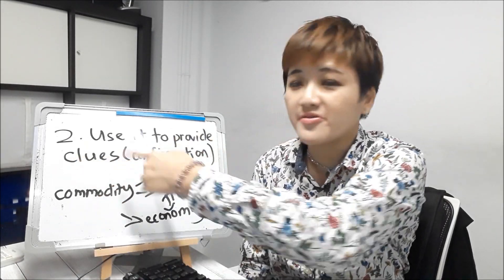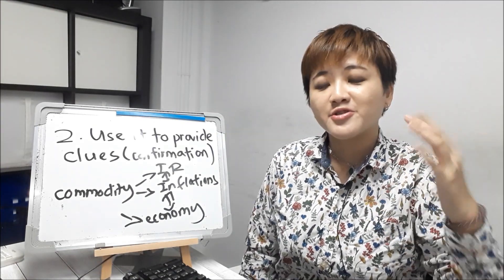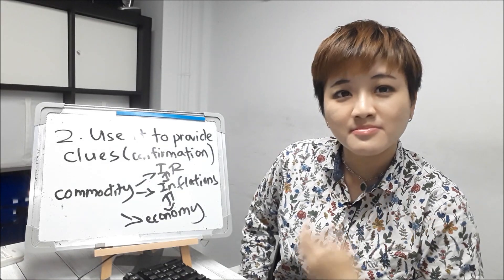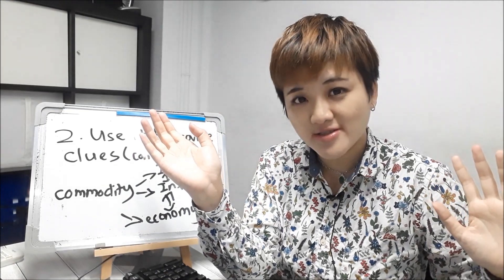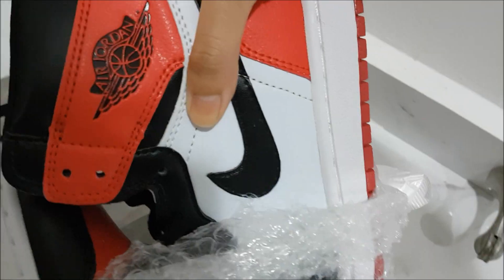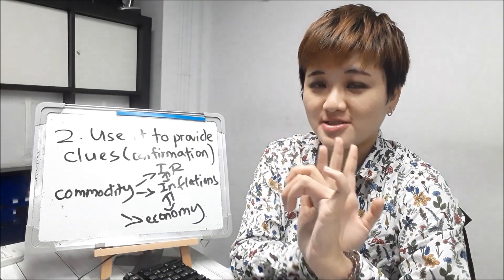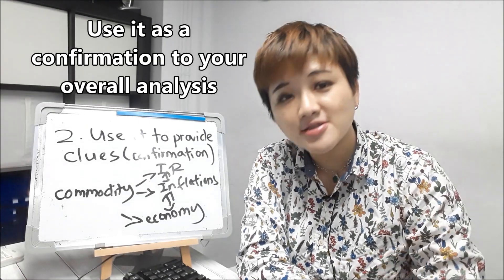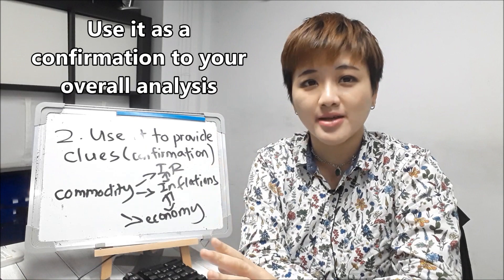So use inter-market analysis to provide clues as a confirmation. This means you cannot use it alone to enter a trade — you can't just say oil prices turned, so I'm going to buy now. What's your other reason? When you buy Jordans, you don't only look at the price — you also look at other things for confirmation: the color, the size, whether the cashier is nice to you. Use it as a confirmation in addition to your technical analysis, your fundamental analysis, and your risk management.